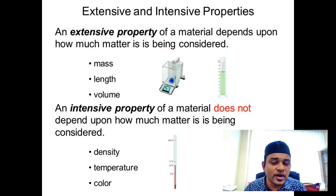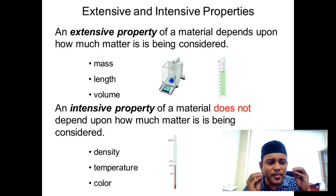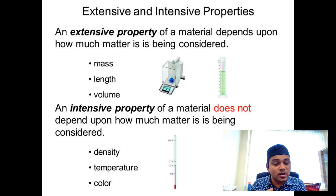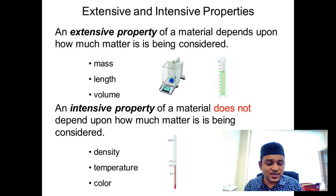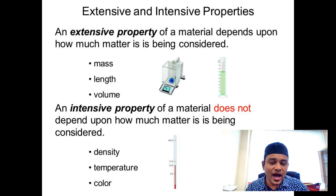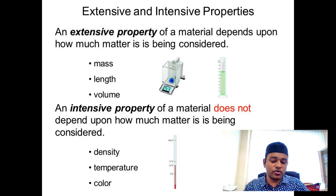We also have intensive properties — these do not depend on the amount of substance. For example, measuring a small cup of hot water at 70°C versus a bigger cup at the same 70°C — the temperature is the same. Density, temperature, and color do not depend on the amount of substance being measured.